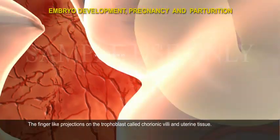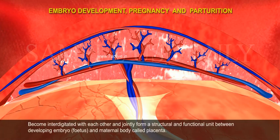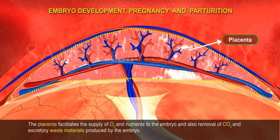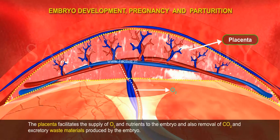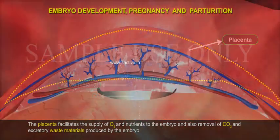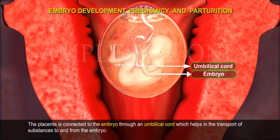The finger-like projections on the trophoblast, called chorionic villi, and uterine tissue become interdigitated with each other and jointly form a structural and functional unit between the developing embryo/fetus and the maternal body, called the placenta. The placenta facilitates the supply of O2 and nutrients to the embryo and also the removal of CO2 and excretory waste materials produced by the embryo. The placenta is connected to the embryo through an umbilical cord, which helps in the transport of substances to and from the embryo.